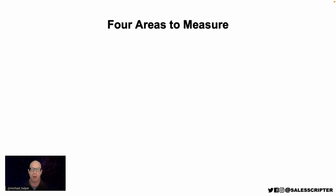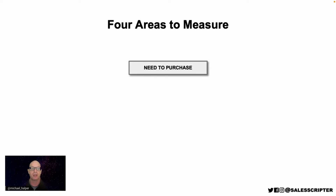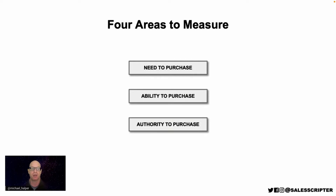For the prospect to be fully qualified and a very strong lead, they should be pretty strong in each of these four areas. The four areas are: Does the prospect need to purchase what you sell? Does the prospect have the ability to purchase what you sell? Does the prospect have the authority to purchase what you sell? And does the prospect have the intent to purchase what you sell?